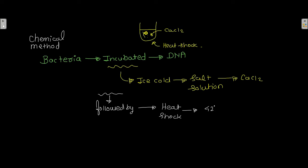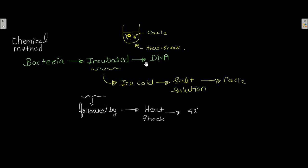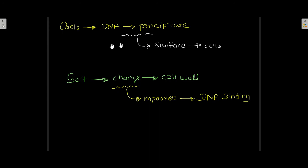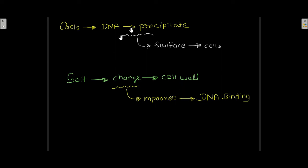How exactly this treatment works is not fully understood, but it is assumed that CaCl2 might cause DNA precipitation on the surface of the cells, allowing DNA to enter, or that the salt present in the solution changes the cell wall of the bacteria which improves DNA binding.